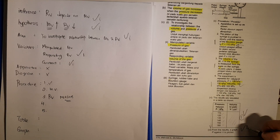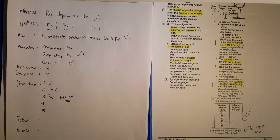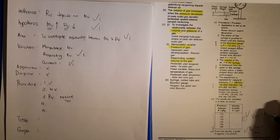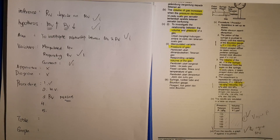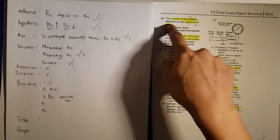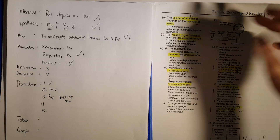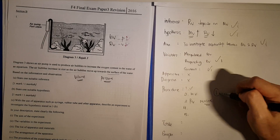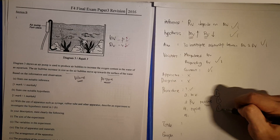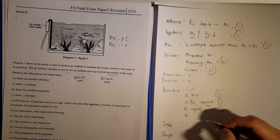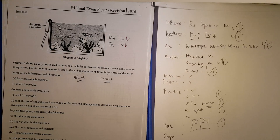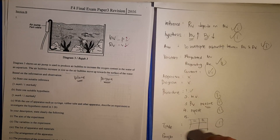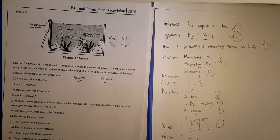Then plot a graph of the responding variable against the manipulated variable — in this case, a graph of V against P. So in total: inference is one mark, then two, three, four, five for procedure (manipulated variable, responding variable, and repeat), one mark for the table, giving you up to nine marks overall. You may lose marks on the graph, apparatus, or diagram, but that's fine.